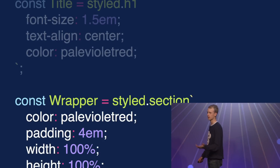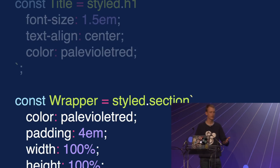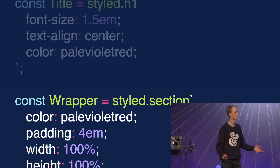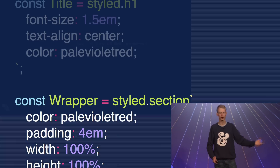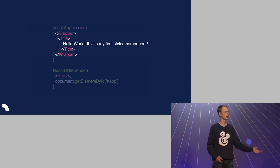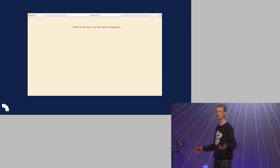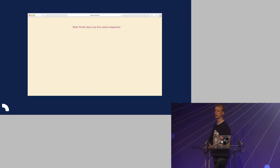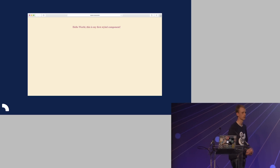Our Wrapper is the same thing — a React component that renders a section tag with a background of papaya, height of 100%, some padding, and a color of pale violet red. These are just React components like any other in your application, so you can render them like any other React components in JSX. When you look in the browser, you see a section with a papaya background and an h1 heading that is pale violet red and aligned to the center.